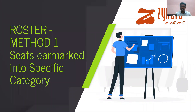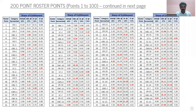Welcome to Zainer's NEET PG and INICET 2022 information series. In part one of this video, we looked at how a roster is prepared to implement the central government's reservation policy, which is UR 40.5%, OBC 27%, EWS 10%, SC 15%, and ST 7.5%. In this video, we will look at roster implementation. If you have not gone through part one, I would suggest you go through that video, which will give you a clear idea of how a roster is prepared for implementing these reservation percentages.